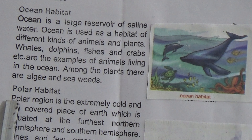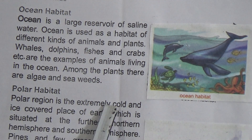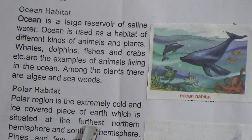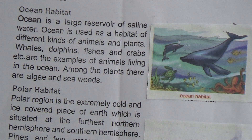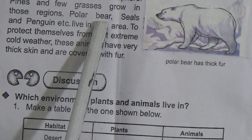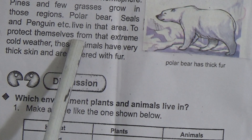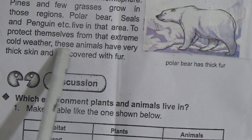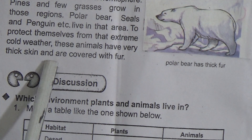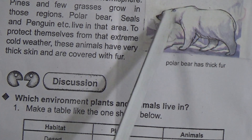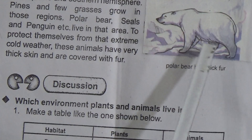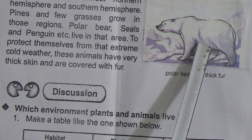Now, polar habitat: the polar region is an extremely cold and ice-covered place on earth, situated at the furthest northern and southern hemispheres. Pines and few grasses grow in those regions. Polar bears, seals, and penguins live in that area. To protect themselves from the extreme cold weather, these animals have very thick skin and are covered with fur.